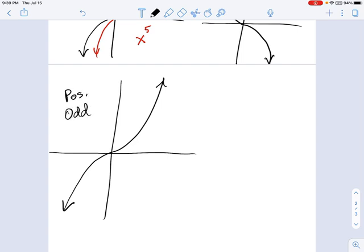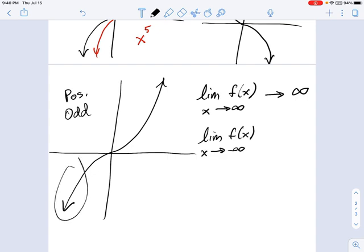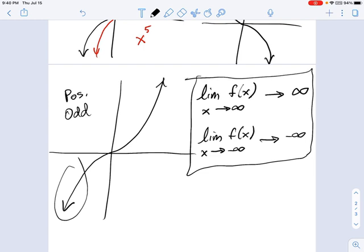The way I would describe positive odd behavior using limit notation is I would say the limit of f of x, as x goes to infinity. Well, as x goes to infinity, you can see the function is going up towards infinity itself. So you would write it this way. And the limit of x going to negative infinity, you can see down here, when x goes to negative infinity, y also goes to negative infinity. And, of course, this description right here will change for each one of the end behaviors. But you can probably, as an exercise, figure that out. Thank you very much.